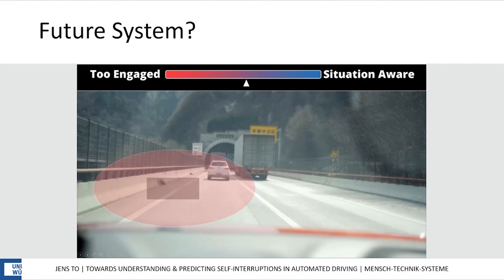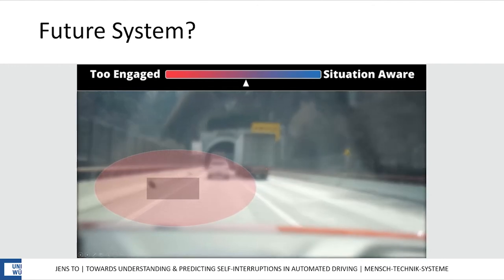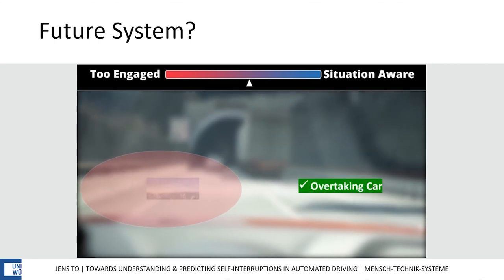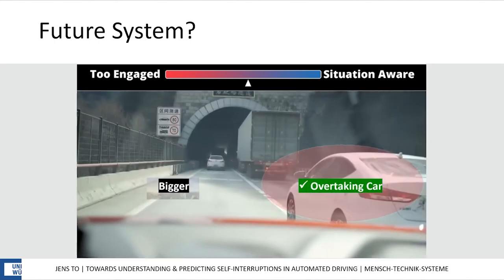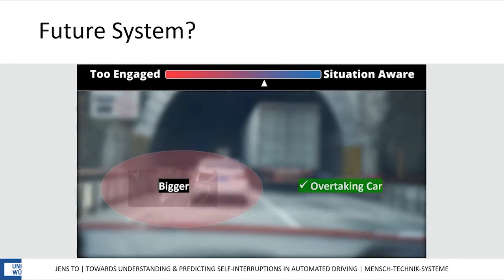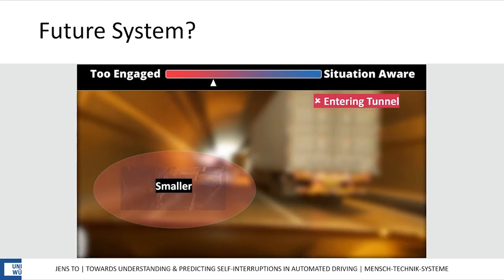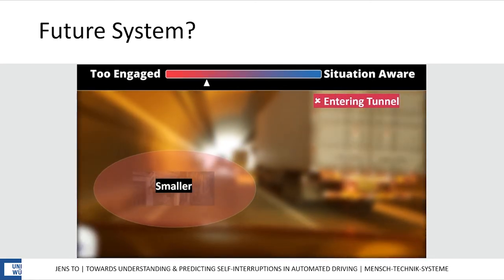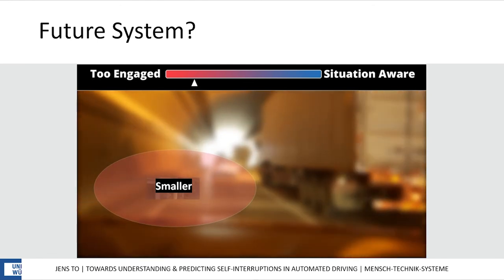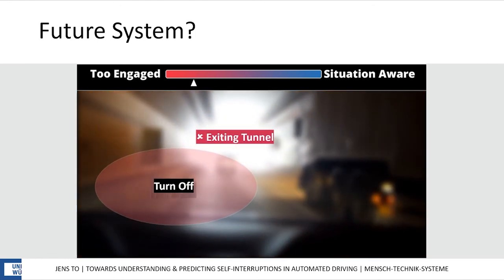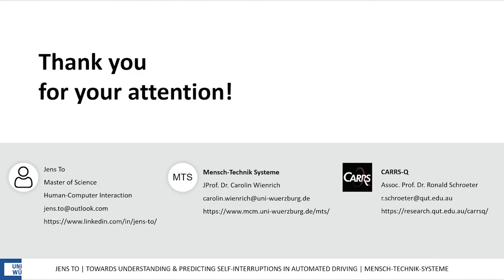To illustrate the visual attention of the driver, there is a red circle and anything else is blurred out. Whenever the driver pays attention to the predicted self-interruption, the screen gets easier to watch. And whenever the driver misses a prediction, the system nudges the driver to pay more attention to the driving environment by making it harder to watch. Thank you.